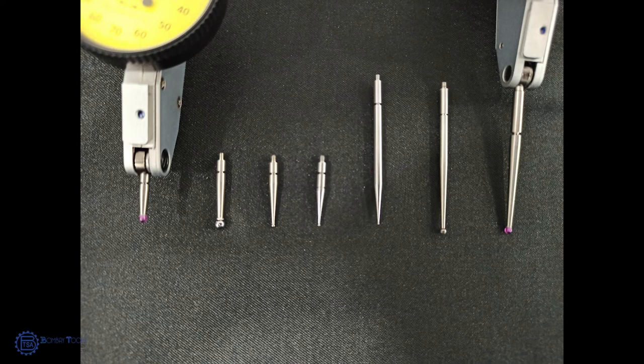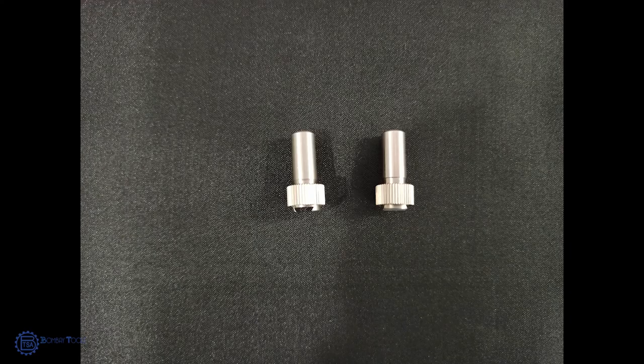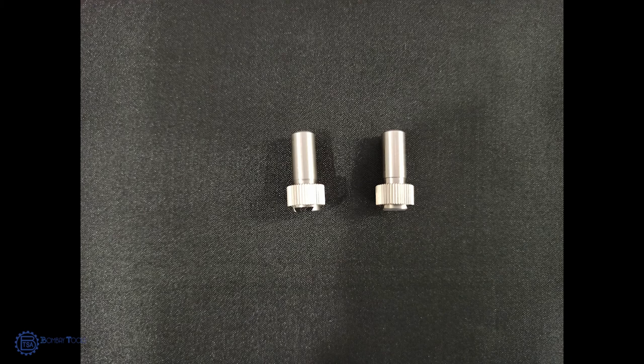Ball points are usually made up of carbide or ruby. The second one is stems with knurled clamp ring. These are used to hold the lever dial gauge in the clamps or magnetic stands.